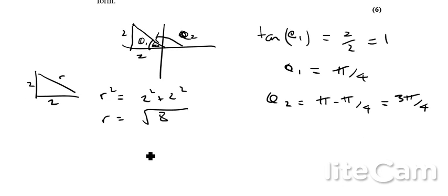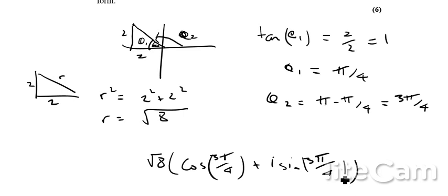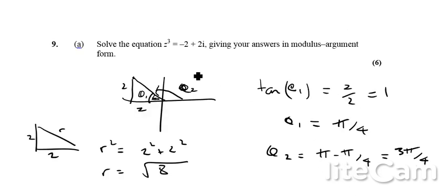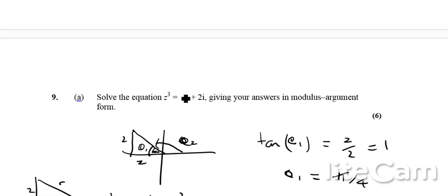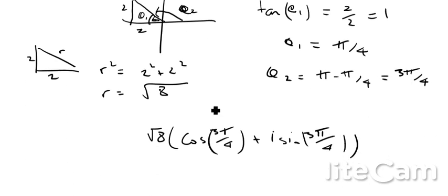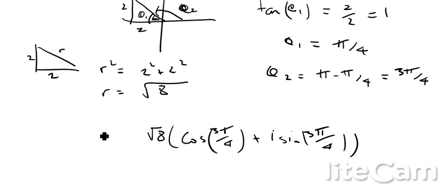So from that, we can rewrite this as we've got root 8 times cos 3 pi over 4 plus i sine 3 pi over 4. Okay, and the next thing that we need to do from that is basically find the cube root of that. In effect, we've got z cubed is this thing here. We've just worked out what this is. So if we've got, in effect, we've just said that z cubed is equal to this thing here. Well, therefore, z is going to be the cube root of that.